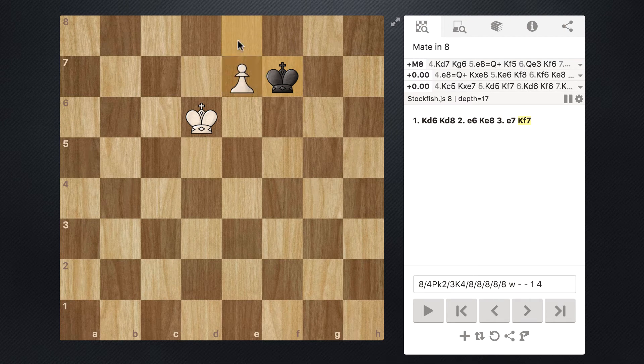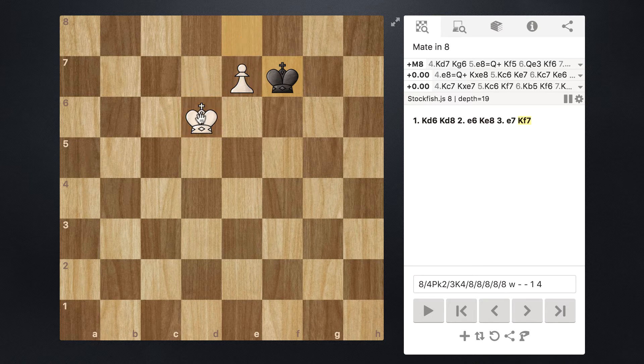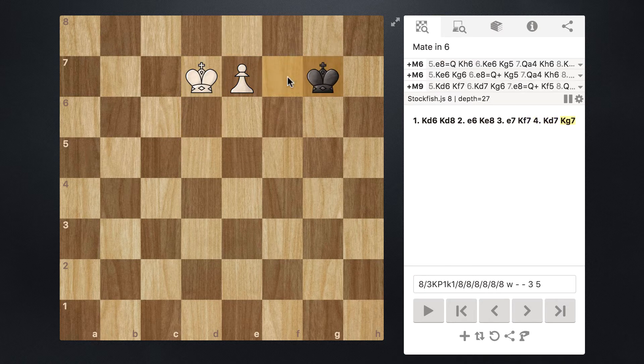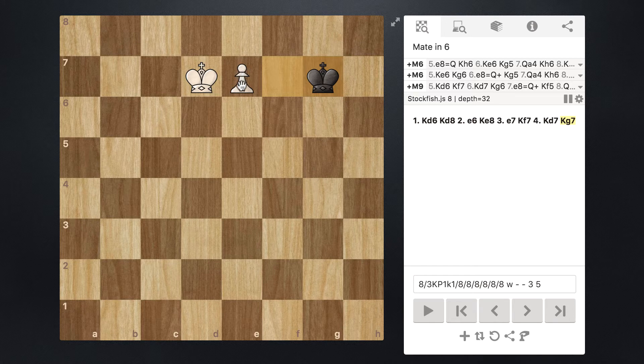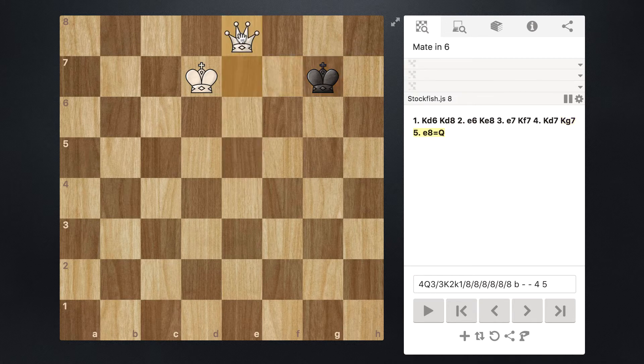And at this point in time, we don't want to move our pawn up quite yet. What we want to do is we want to first move our king up and then it doesn't really matter where this black king moves. We can just go ahead and promote to a queen.